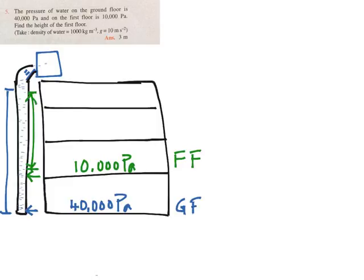So let us mark these two heights. The height of this water column on the ground floor is h1, and that on the first floor is h2.